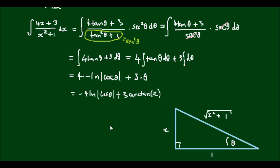And from this, cos theta is equal to the adjacent side 1 over the hypotenuse, the square root of x squared plus 1. So this now can be substituted for cos theta.